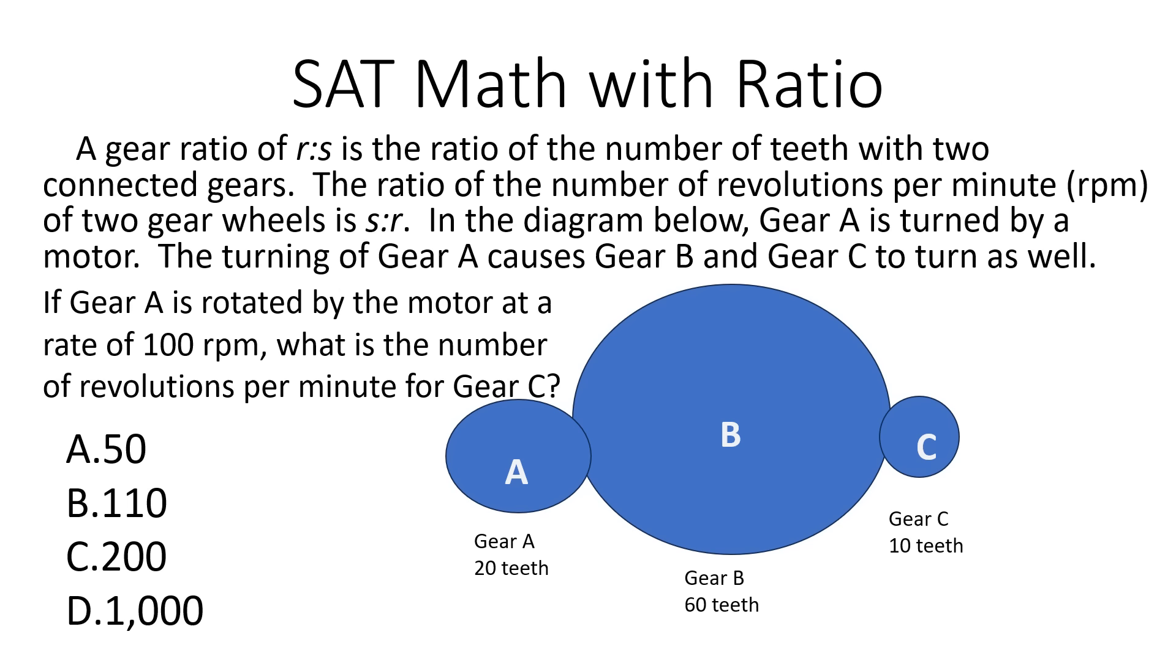This is SAT math with ratio, and it doesn't take too long. A gear ratio of R to S, or R colon S, is the ratio of the number of teeth with two connected gears. The ratio of the number of revolutions per minute (RPM) of two gear wheels is S:R. In the diagram below, gear A is turned by a motor. The turning of gear A causes gear B and C to turn as well. If gear A is rotated by the motor at a rate of 100 RPM, what is the number of revolutions per minute for gear C?